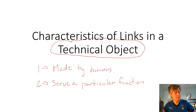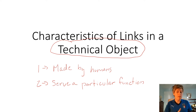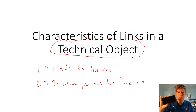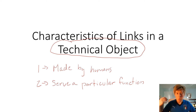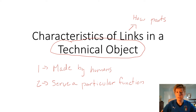It's designed to hold coffee, tea, hot chocolate, or whatever. Another example of a technical object — one all of you probably have or have used — is a cell phone: made by humans, serves a particular function. When we're looking at the characteristics of links, we're really looking at how the parts are put together and how they function in the object in general.